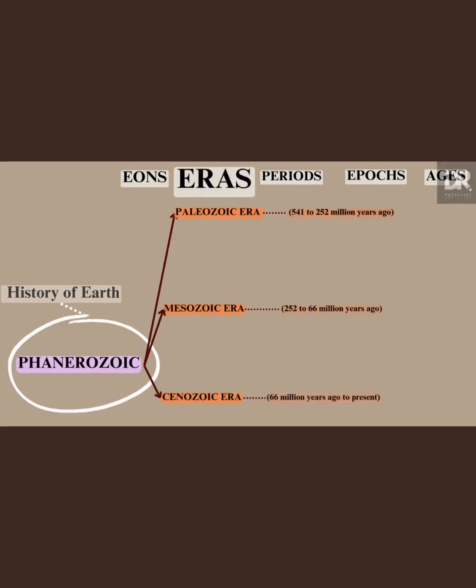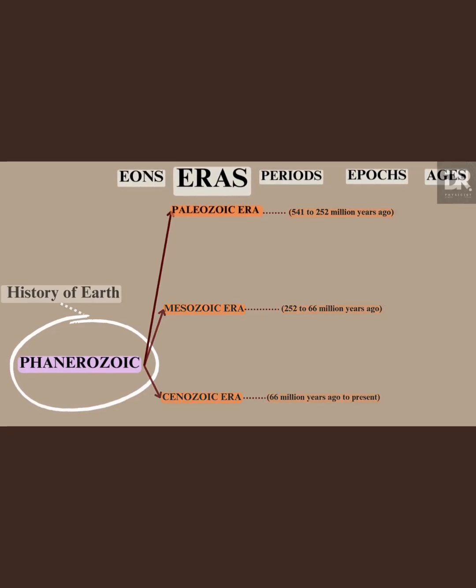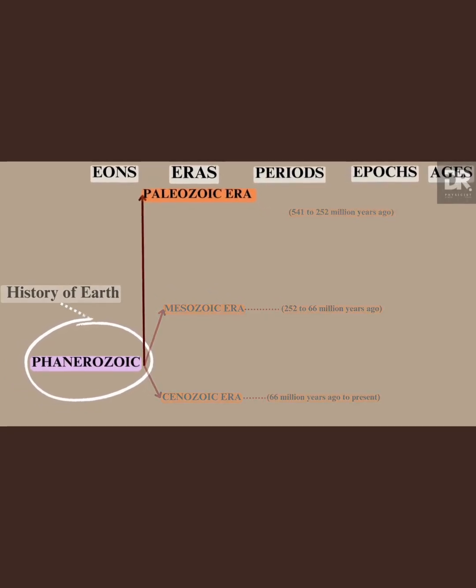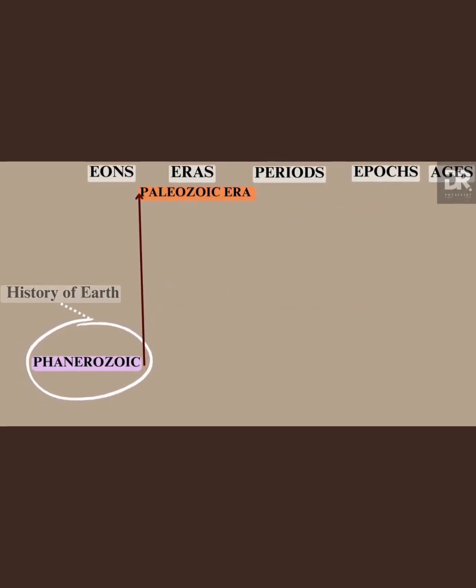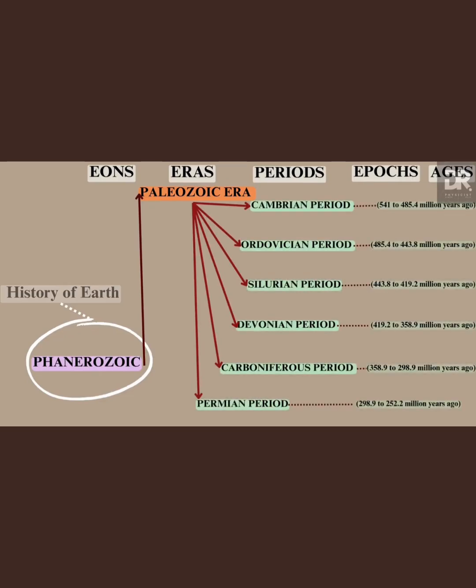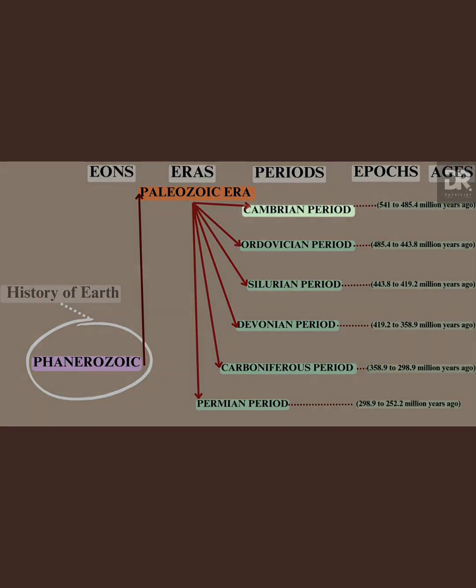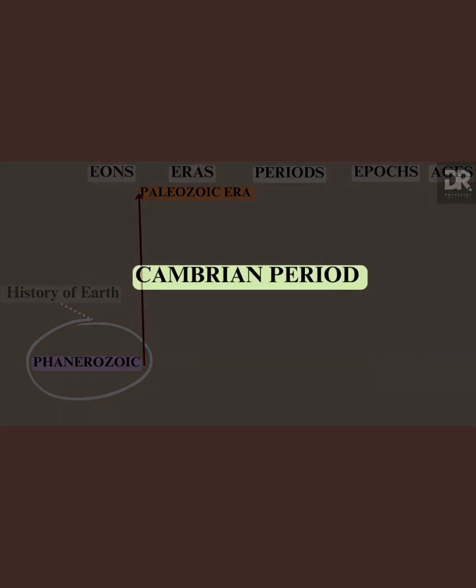Subdivisions of eras, lasting tens of millions of years, are called periods. Geologists divided the Paleozoic era into six periods, and the first period is known as the Cambrian period.